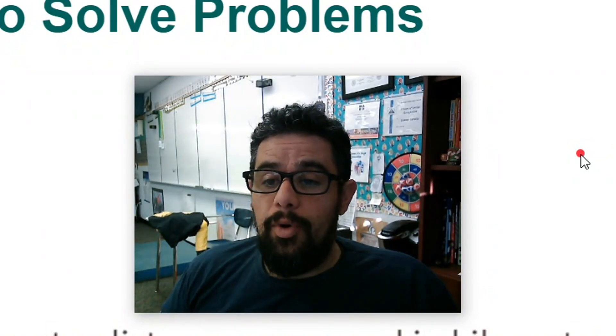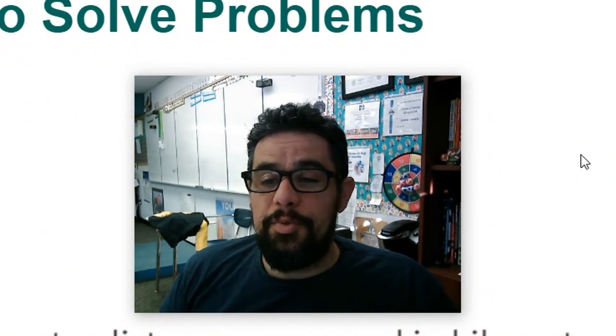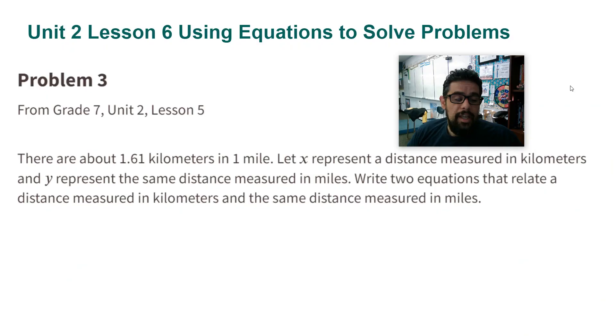All right, ladies and gentlemen, Mr. Uruti here, and I'm going over Unit 2, Lesson 6, Practice Problem Number 3. There are about 1.61 kilometers in 1 mile. Let x represent the distance measured in kilometers and y represent the same distance measured in miles. Write two equations that relate a distance measured in kilometers and the same distance measured in miles.